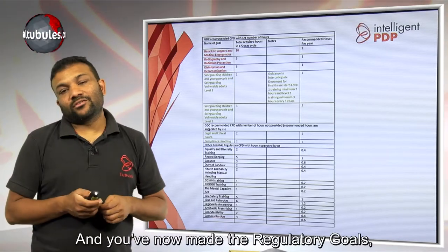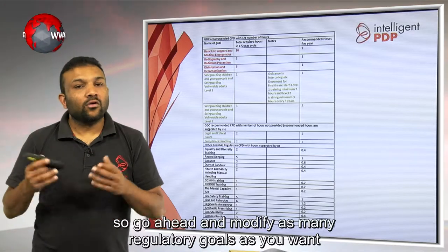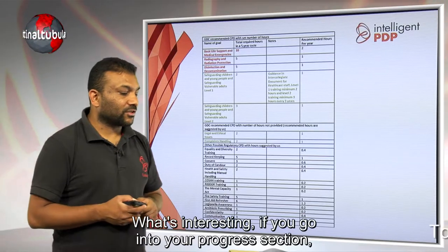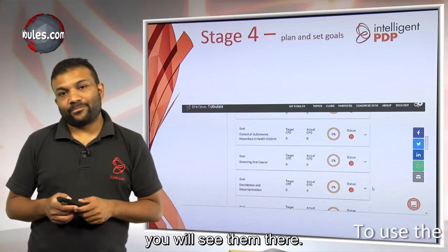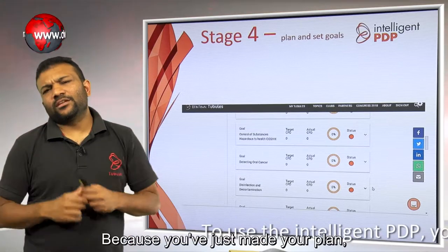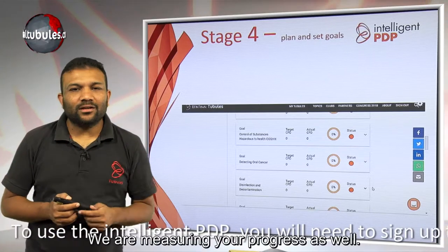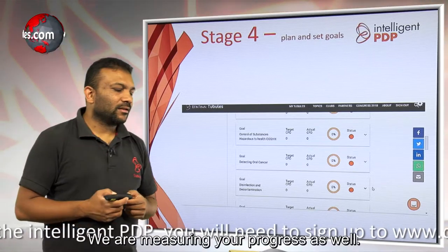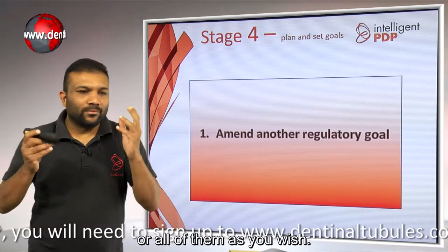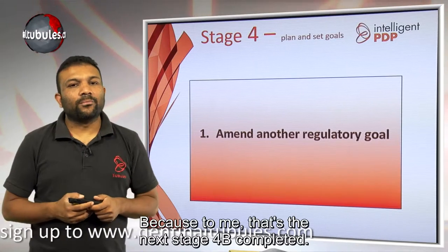Go ahead and modify as many regulatory goals as you want on your Intelligent PDP. What's interesting is if you go into your Progress section you'll see your goals with red lights at zero percent, because you've just made your plan and haven't started meeting these goals yet. We are measuring your progress as well. Amend another regulatory goal — or all of them — because that's the next stage. Stage 4B completed.